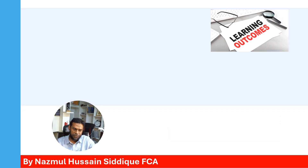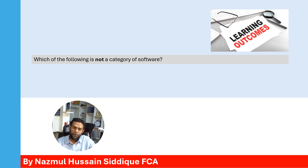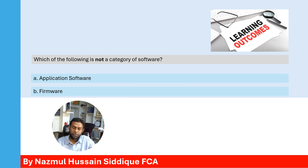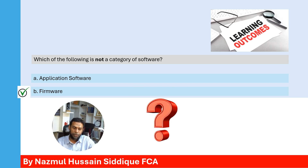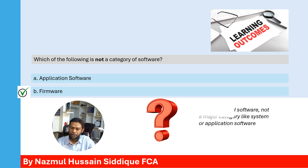Question three: Which of the following is not a category of software? Option A: application software. Option B: firmware. Option B is the correct answer, because firmware is not a major category of software — it is a type of embedded software, not a major category like system or application software.